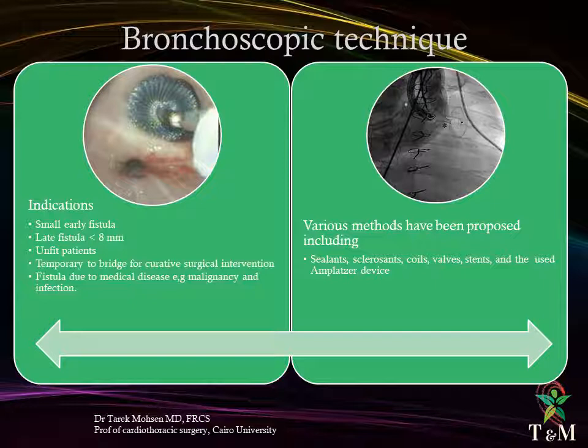The fiber optic bronchoscopic technique is indicated in early small fistulas, late fistulas less than 8 millimeters, unfit patients who cannot undergo surgical intervention, as a temporary bridge for curative surgical intervention, patients on mechanical ventilators, and fistulas due to medical disease such as malignancy or infection. Various methods have been proposed including sealants such as fibrin glue, sclerosants such as ethanol, endobronchial valves, silicone and metallic stents, and the use of Amplatzer devices. Further details were provided in a previous lecture.